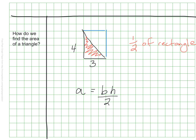So for example, in this case, I would do four times three, which is twelve, and then divide that by two, which means the area is six square units.